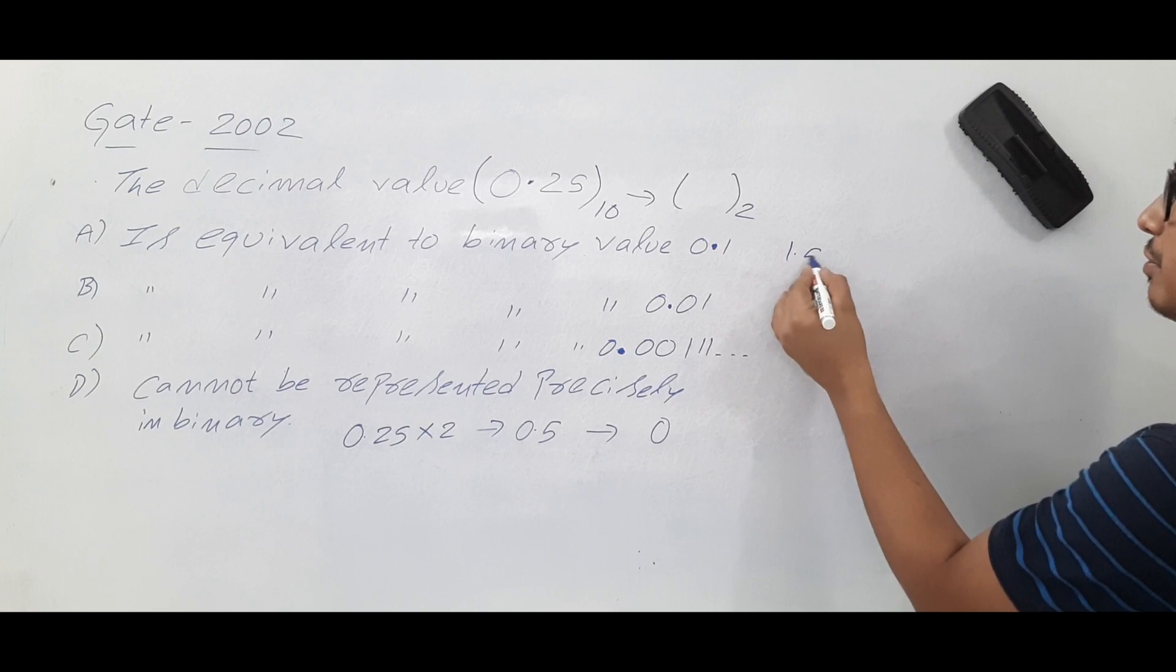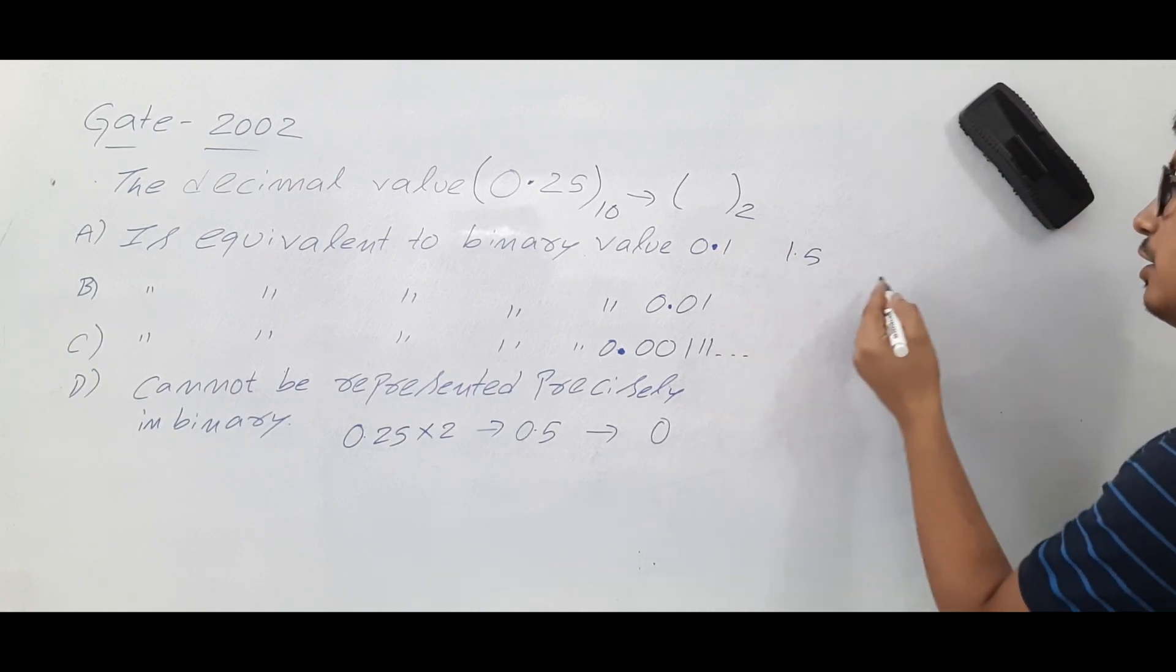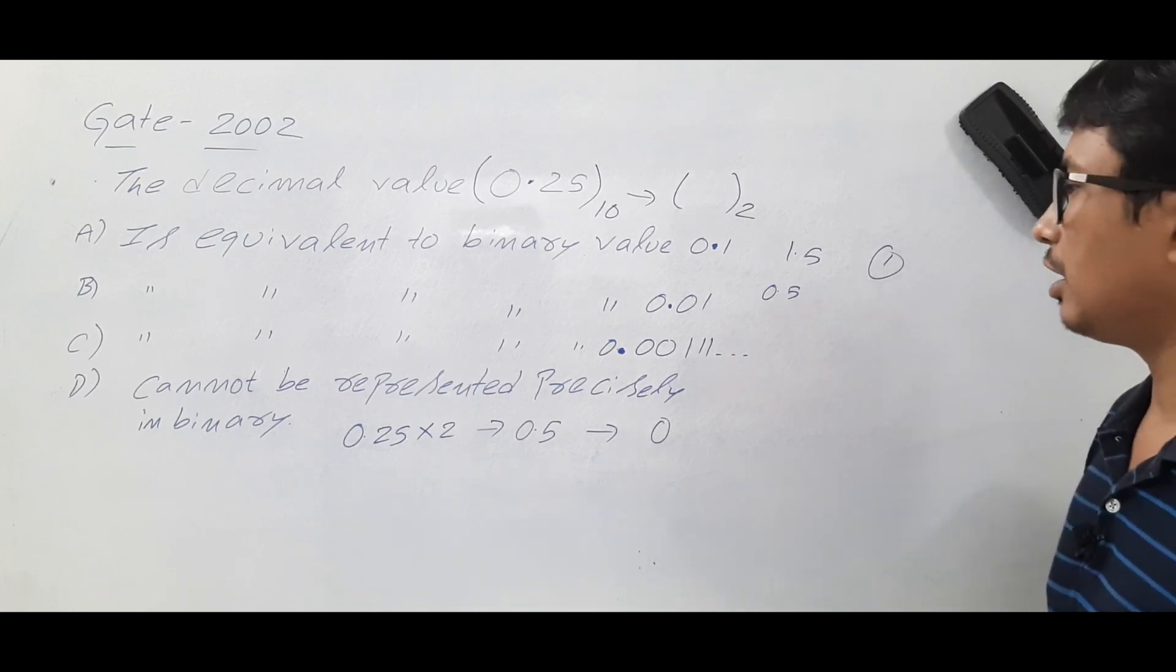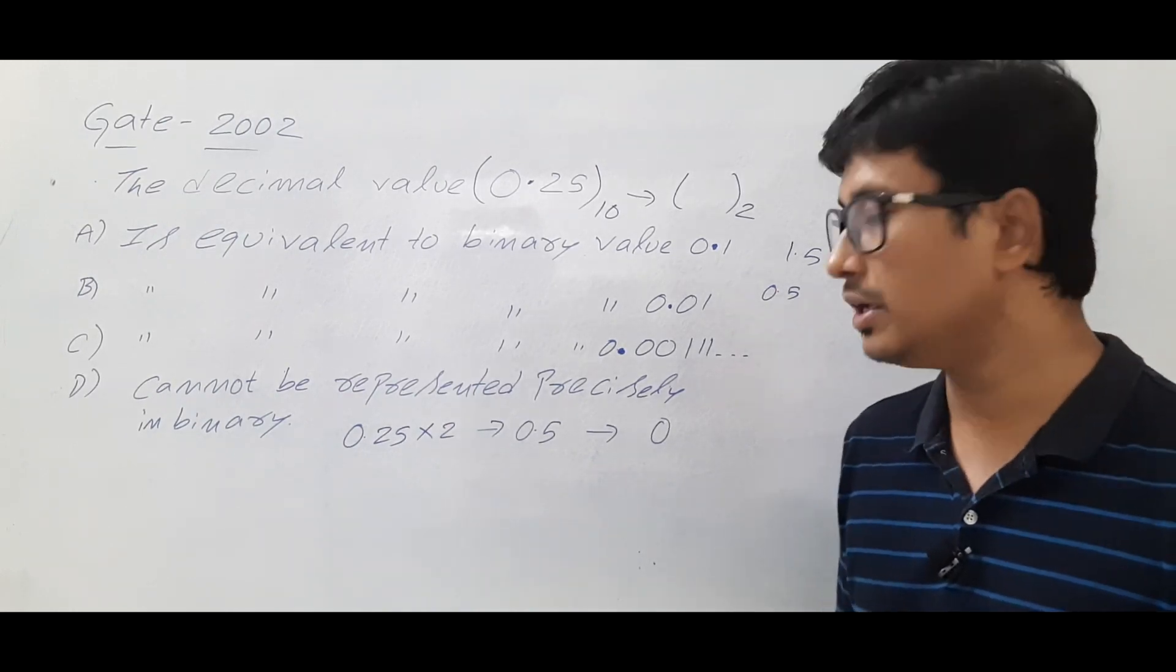Suppose if you got 1.5, let's take an example. Then you will keep the 1 here. Again you will take 0.5 multiplied with 2. The same process you have to repeat it.